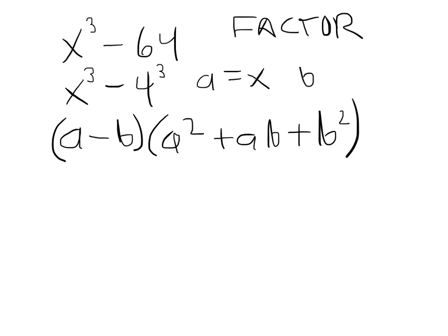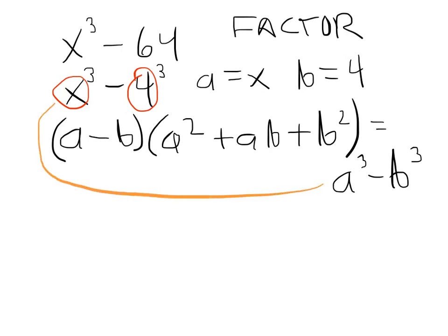Now in our case, our a is equal to x and our b is equal to 4. Let's take a look just to make sure that you can see that. Check it out: here's our a and here's our b. In other words, if we believe that this equals a³-b³, then it must be true that this guy must be our a and this guy here must be our b. So the good news is factoring goes quick and easy. We just go like this.